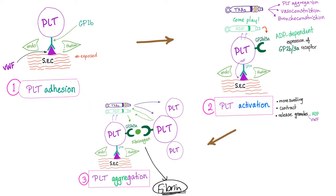Fibrinogen will be converted into fibrin in a process called the coagulation cascade, or secondary hemostasis. After we form the clot and it has done its work and run its time, let's destroy this clot and restore function. This is called fibrinolysis, which is the topic of today's video.